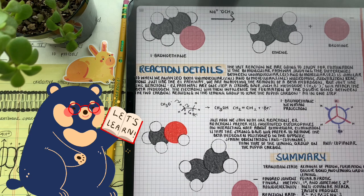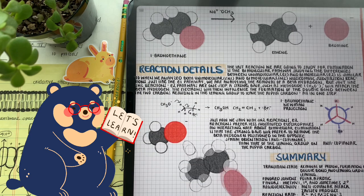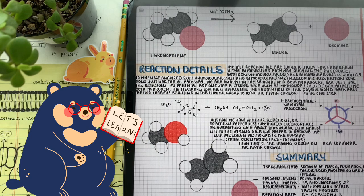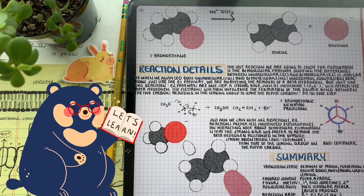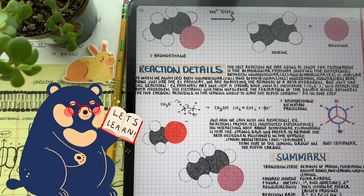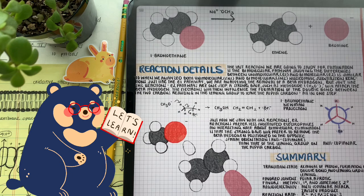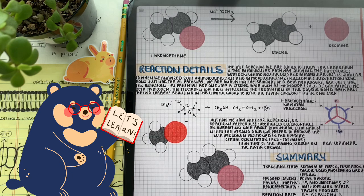Because this happens in one step, the base favors anti-coplanar geometry, meaning that it favors a hydrogen on the beta carbon that's in a different spatial arrangement than that of the leaving group. Because remember, the leaving group has an increase in electron density, so it wants to be able to attack from the other end.